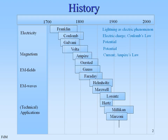After Ampere, around 1820, it was Ørsted — Swedish Ørsted — and he dealt with magnetic forces and fields.